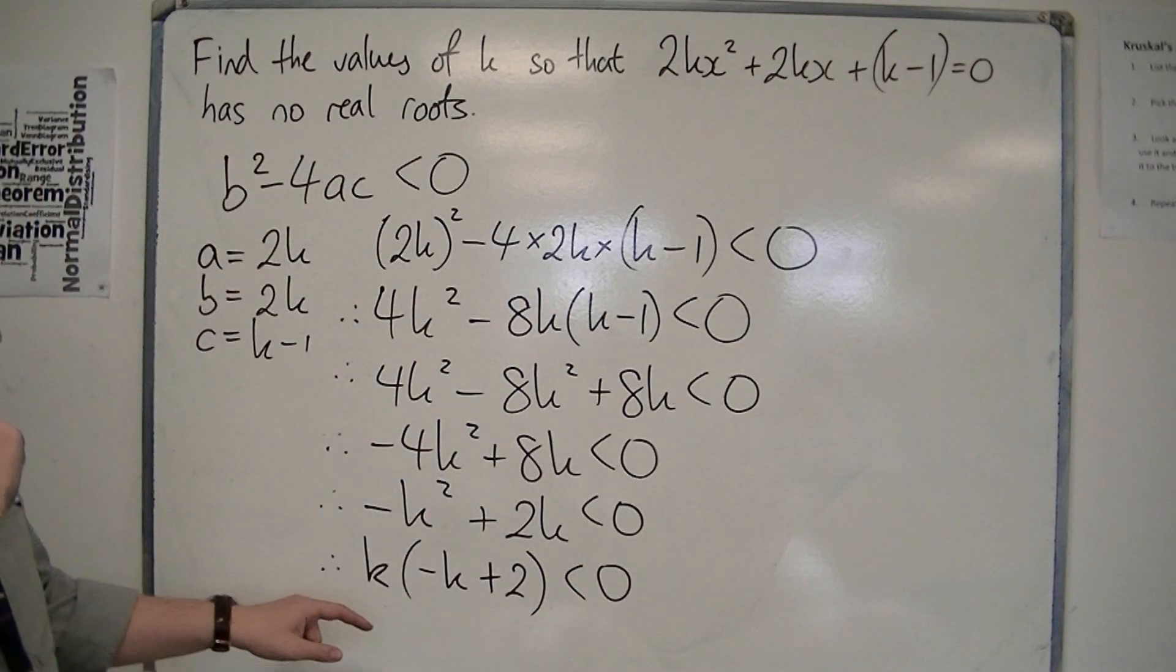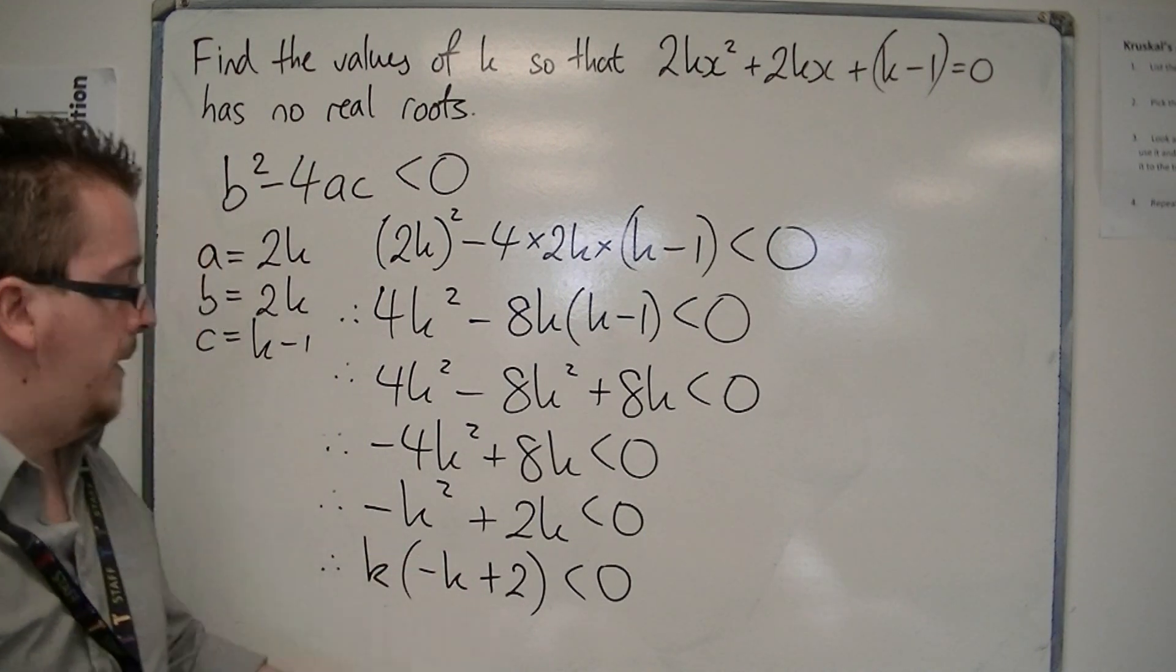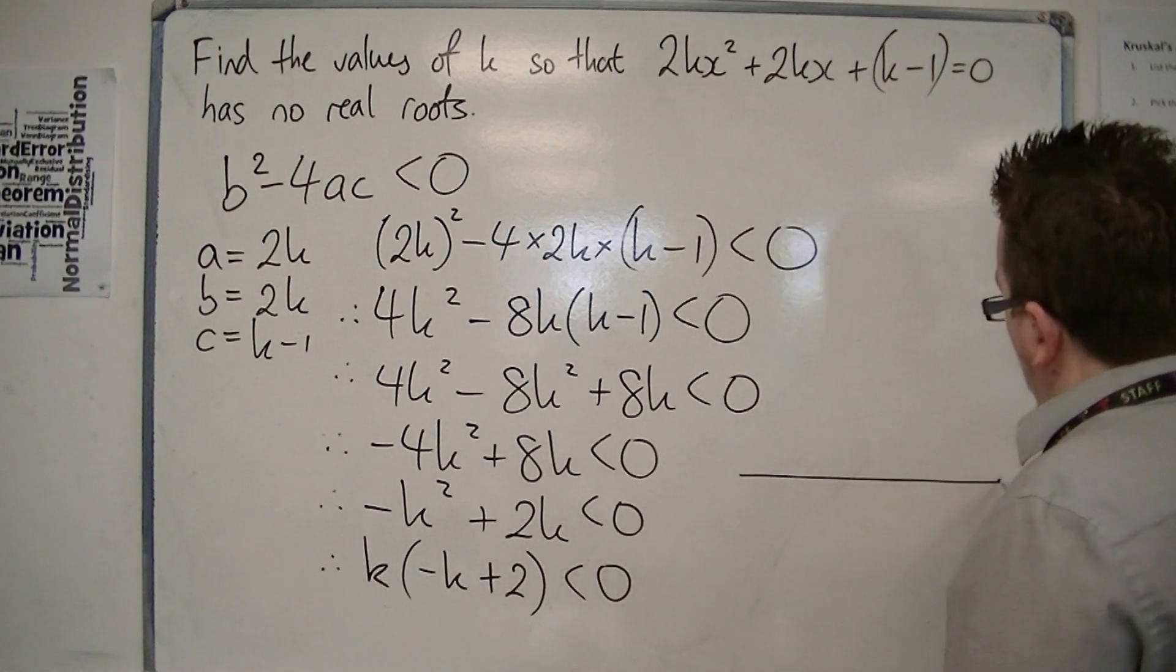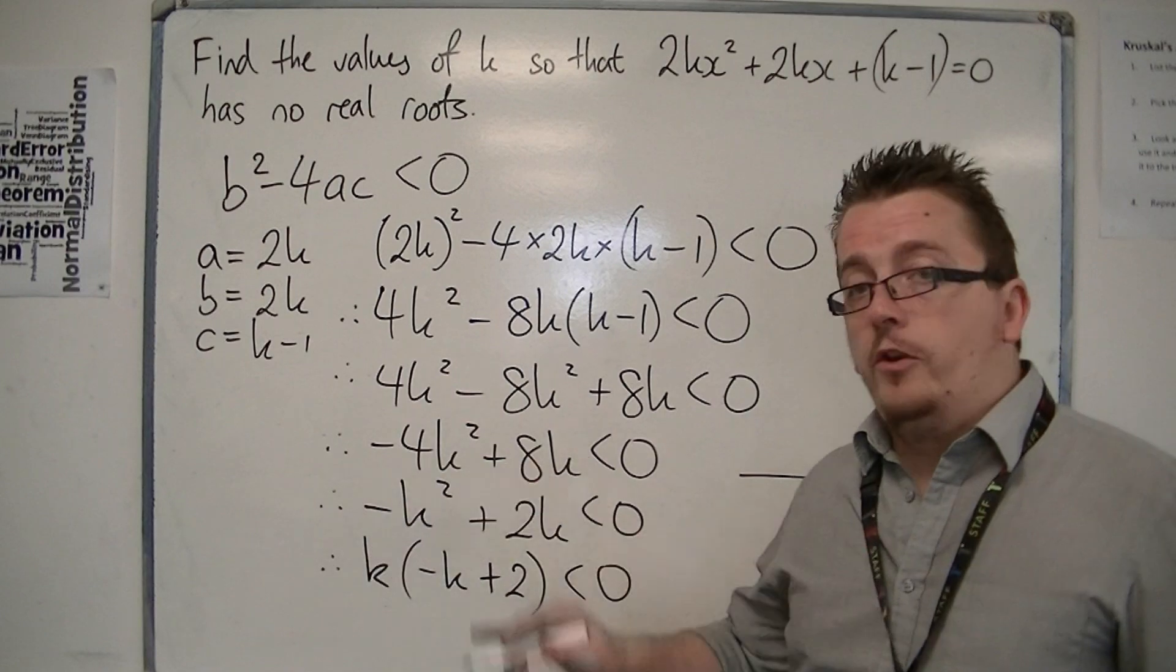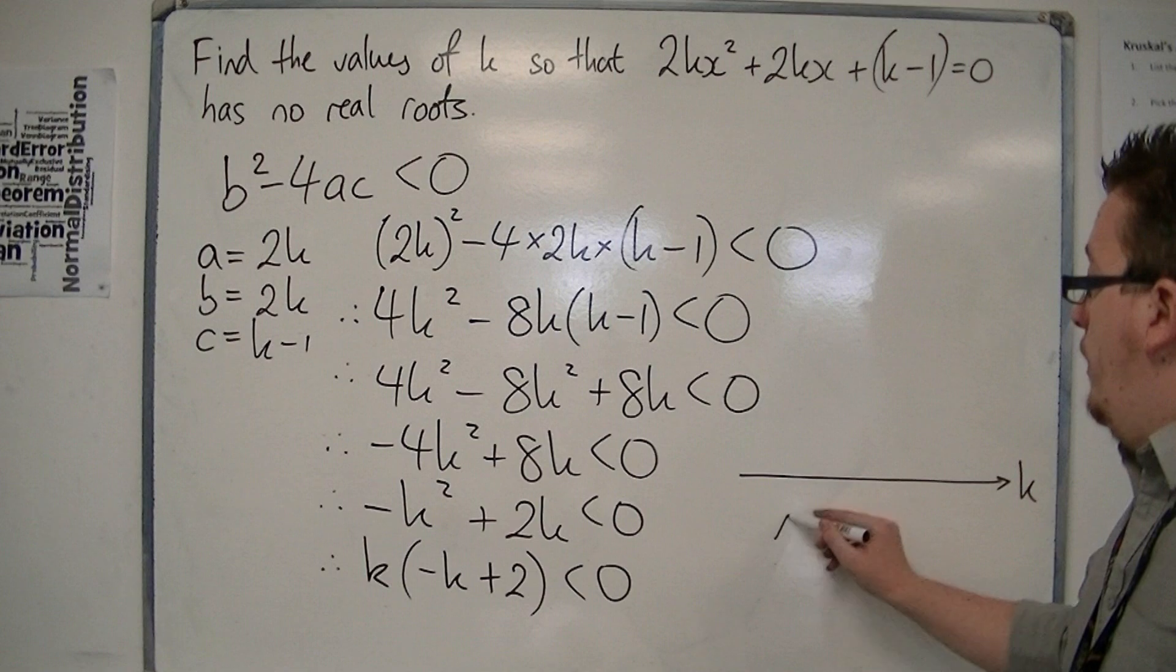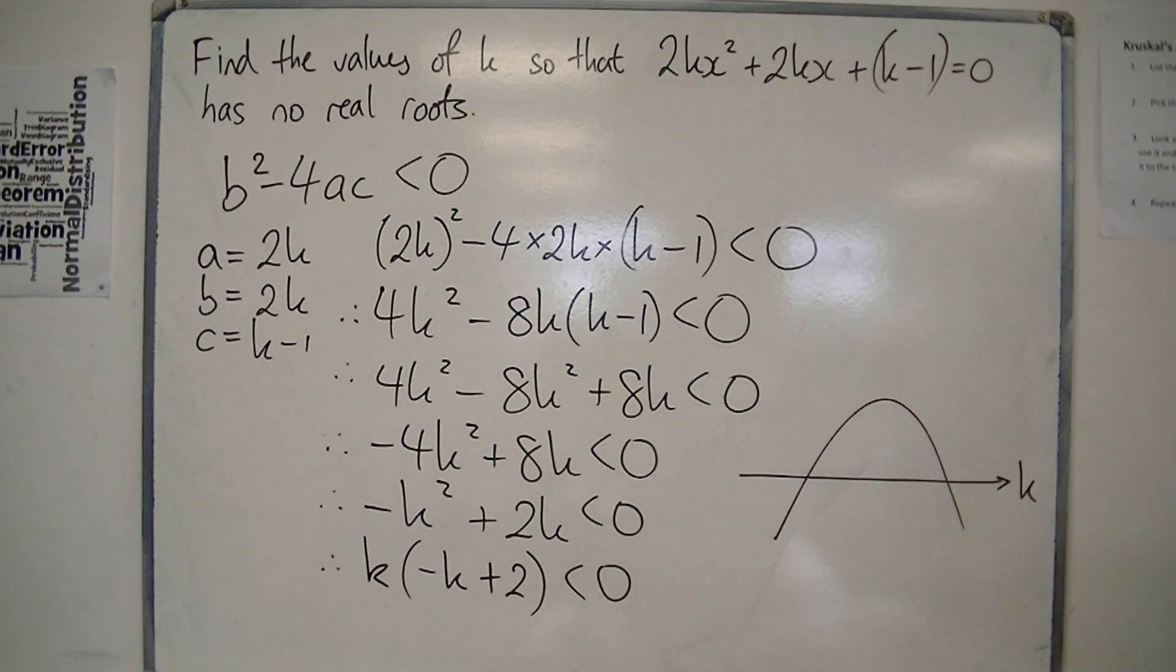This is a quadratic with solutions at 0 and 2. We're dealing with a parabola which, because we've got a negative in front of the k², is upside down - a sad face if you like.